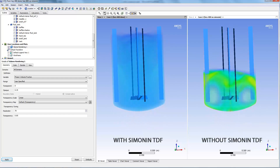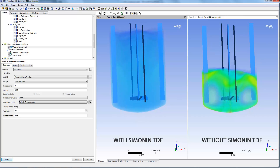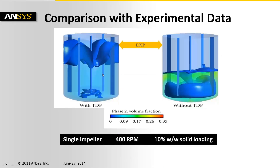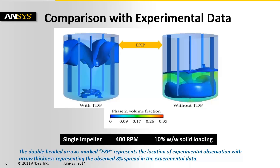But then the question is which one of them is correct? We do have experimentally observed cloud height data which can be compared with our predictions. To measure the cloud height in CFD, we have created an isosurface of the volume-averaged secondary phase volume fraction. The measured cloud height is the maximum value of the Z coordinate for these isosurfaces, where the Z axis is along the shaft. As we can see, for the single impeller reactor, inclusion of Simonin TDF compares well with the observed experimental data.